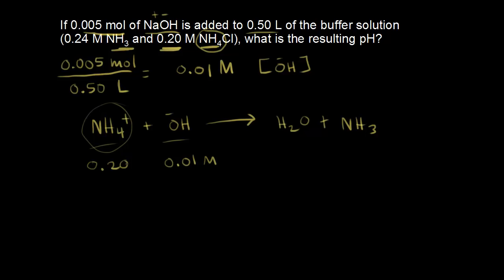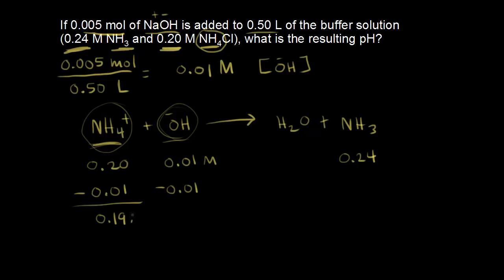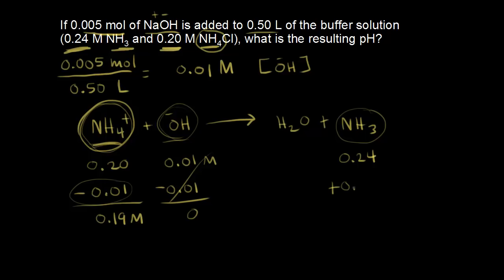For concentrations: hydroxide is 0.01 molar, ammonium is 0.20 molar, and ammonia is 0.24 molar. All of the 0.01 molar hydroxide reacts with ammonium, neutralizing the same amount. We're left with 0.19 molar ammonium. Hydroxide goes to zero after reacting. Since ammonium turns into ammonia, we gain 0.01 molar of ammonia, giving a final ammonia concentration of 0.25 molar.